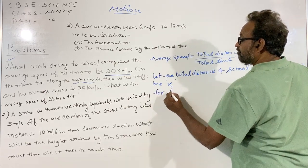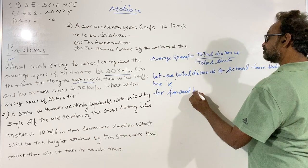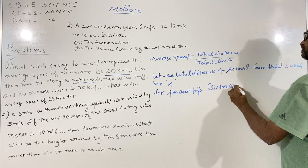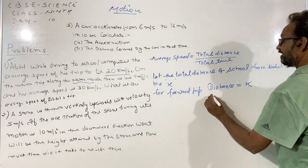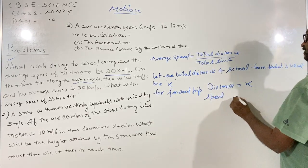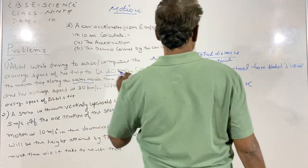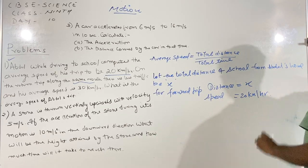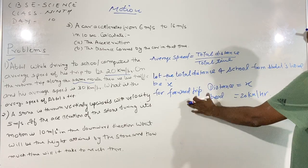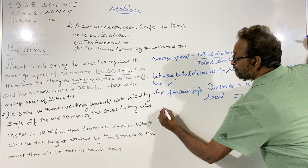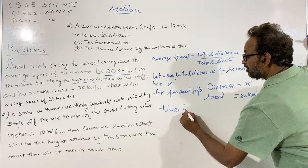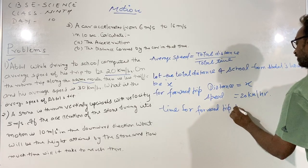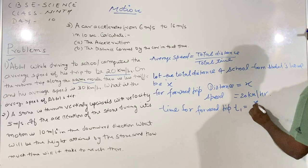For the forward trip, distance is equal to x, and average speed is equal to 20 km per hour. So let us calculate the time for the forward trip. Time for the forward trip, T1, is equal to x over 20.